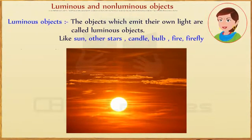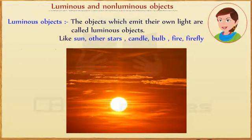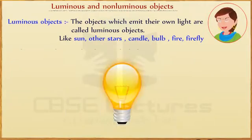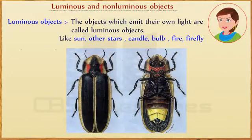Luminous objects: the objects which emit their own light are called luminous objects. Like sun, other stars, candle, bulb, fire, firefly, etc.